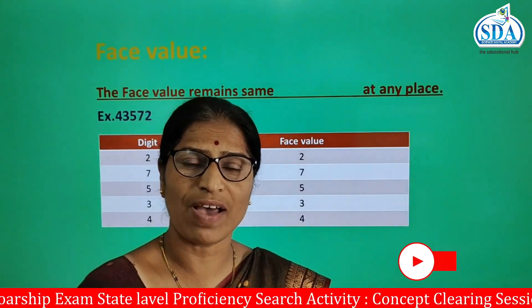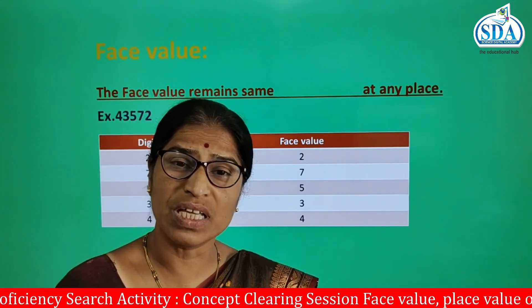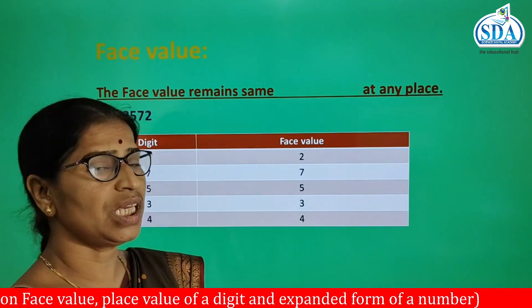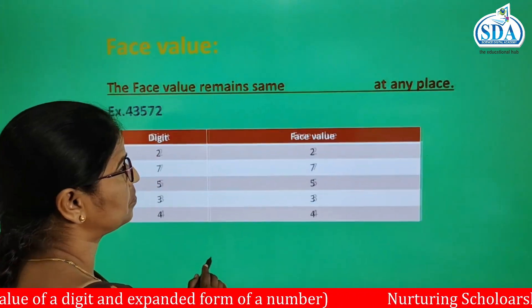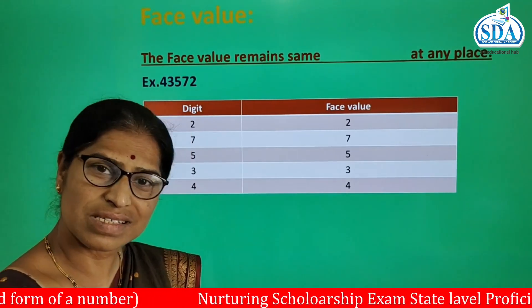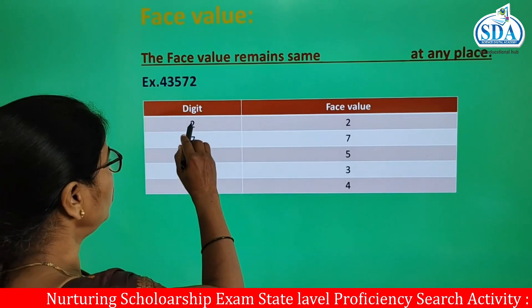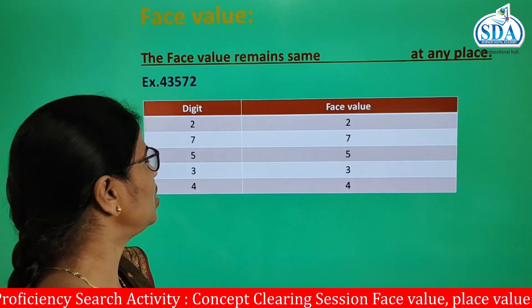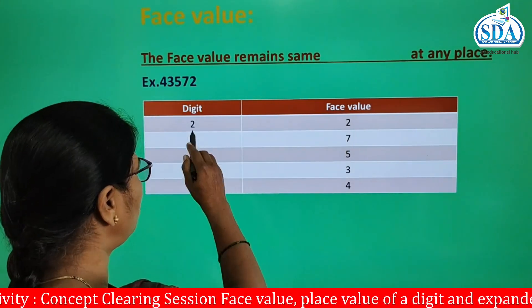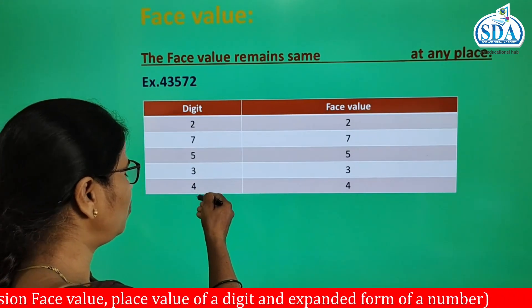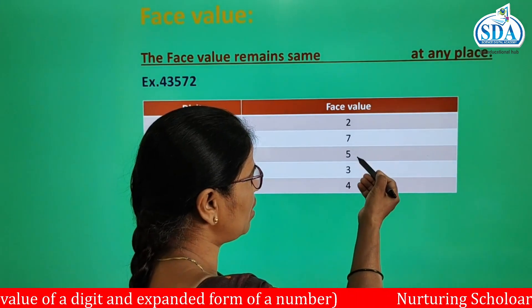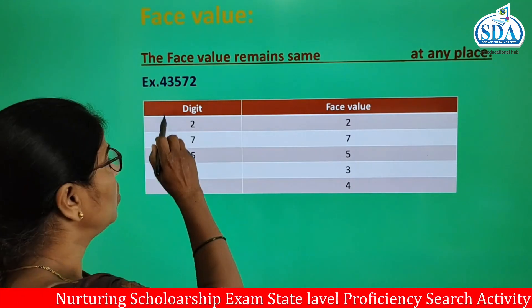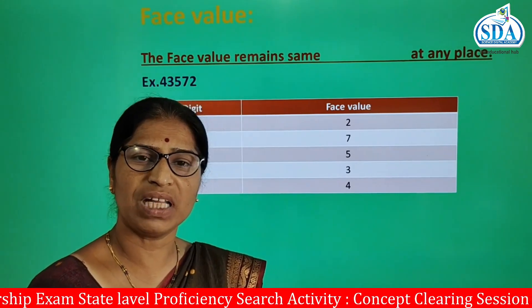Now the face value. The face value of a digit is nothing but the value of that digit itself. That means the face value remains the same at any place. Taking the same number as an example: the digits are 2, 7, 5, 3, and 4. The face value of digit 2 is also 2. In the same way, digits 7, 5, 3, and 4 have the face values 7, 5, 3, and 4 respectively. Face value is simply the value of that particular digit itself.